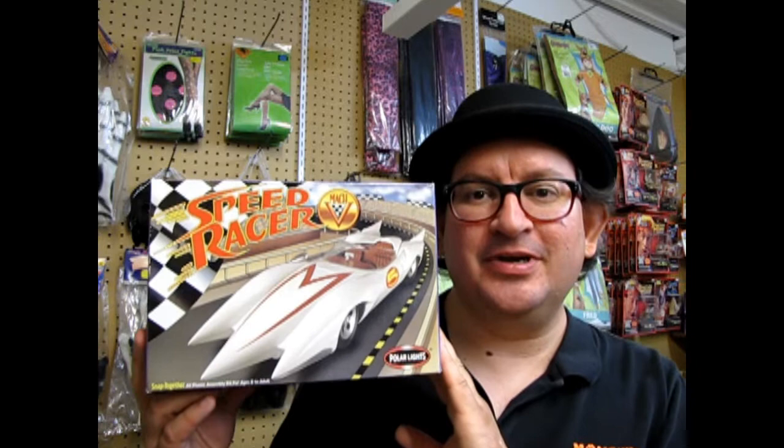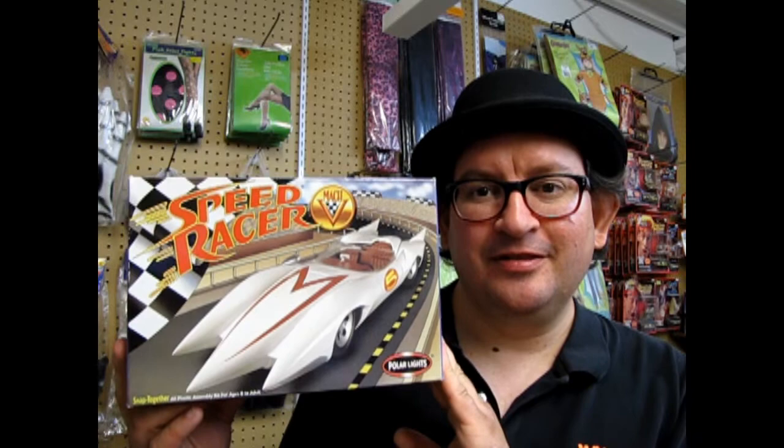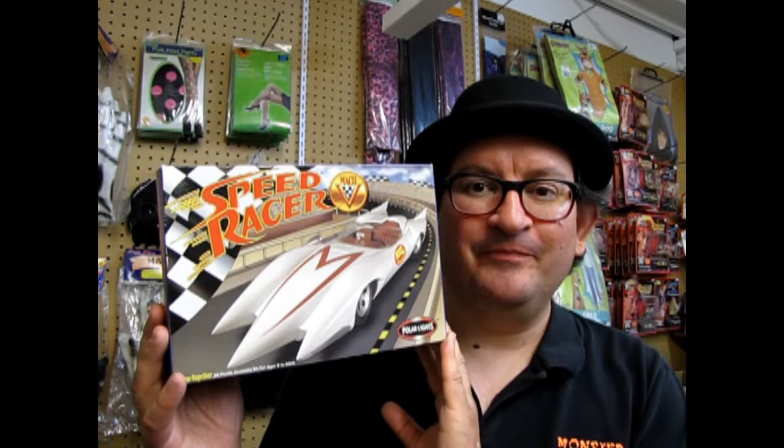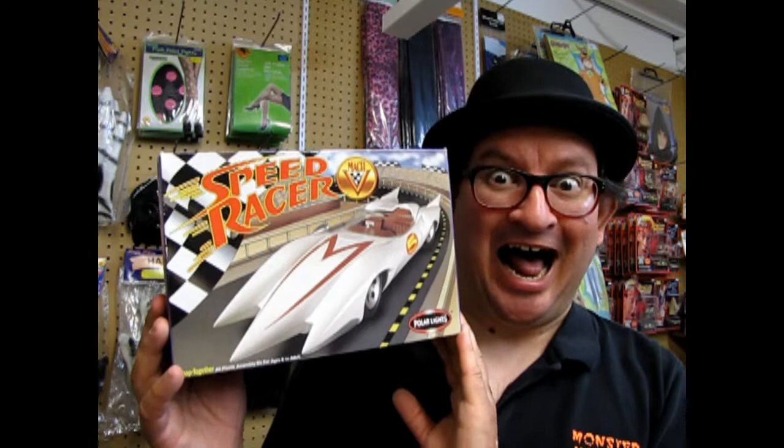Tonight we're going to look at a cartoon car. This would go very nicely with your Beatles Yellow Submarine, although that is an English cartoon and this is a Japanese cartoon, very famous back in the day. We've got this nice box for our Speed Racer Mach 5 racer. Now let us go down and check out the build.